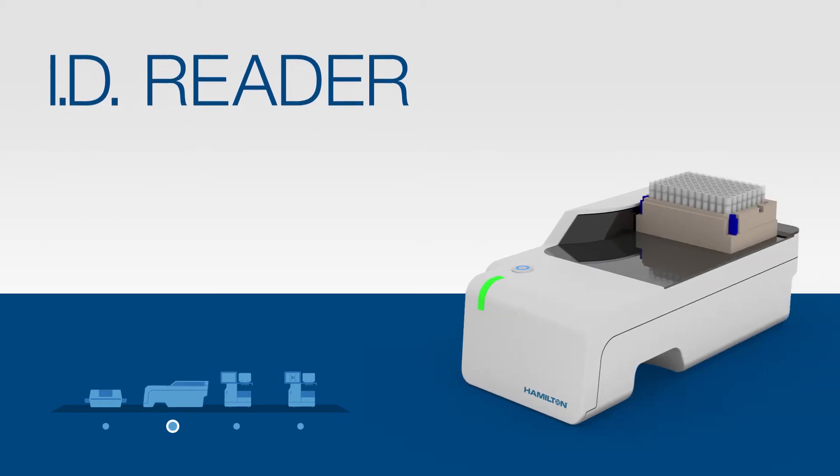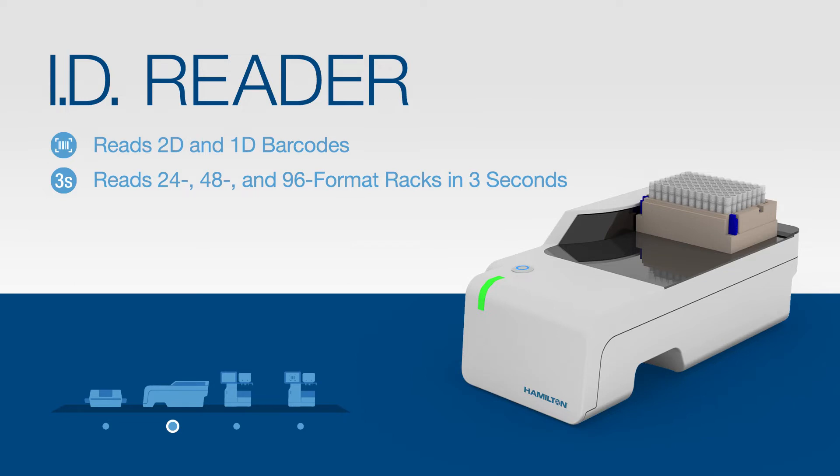Next, we have the LabElite ID Reader, a small instrument used to read 2D tube and 1D rack barcodes. The device features single-touch execution for high-speed 2D barcode reading on the bottom of racks. It can read 24, 48 or 96 format racks in about 3 seconds and 384 format racks in about 5 seconds. The ID Reader features configurable output options in CSV or XML formats for integration with LIMS or other systems for sample tracking.